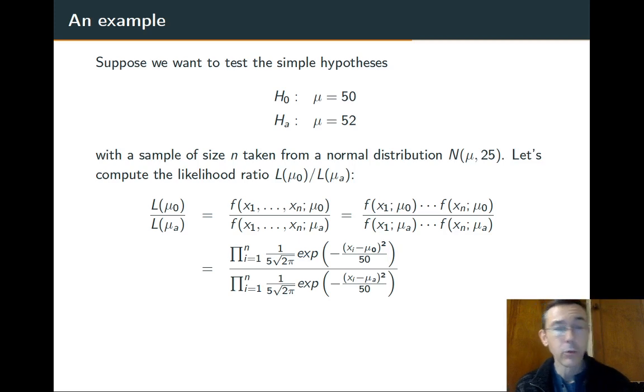That's what we're doing. Let's replace the f's with the actual PDF for the normal distribution. So the PDF for the normal distribution: 1 over σ times the square root of 2π times the exponential function negative (x - μ)² over 2σ². So that's where the products in the top and bottom are coming from.